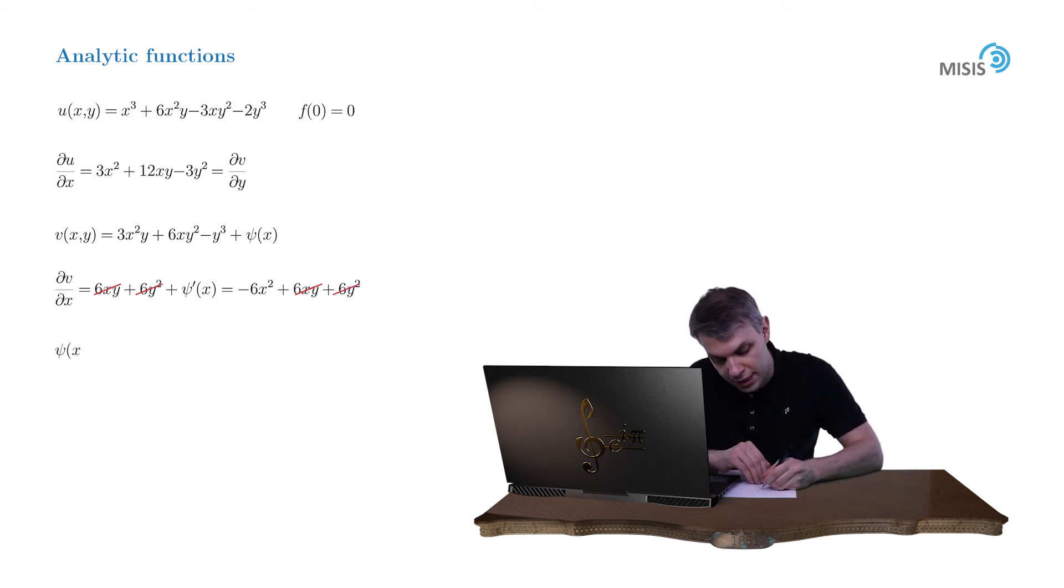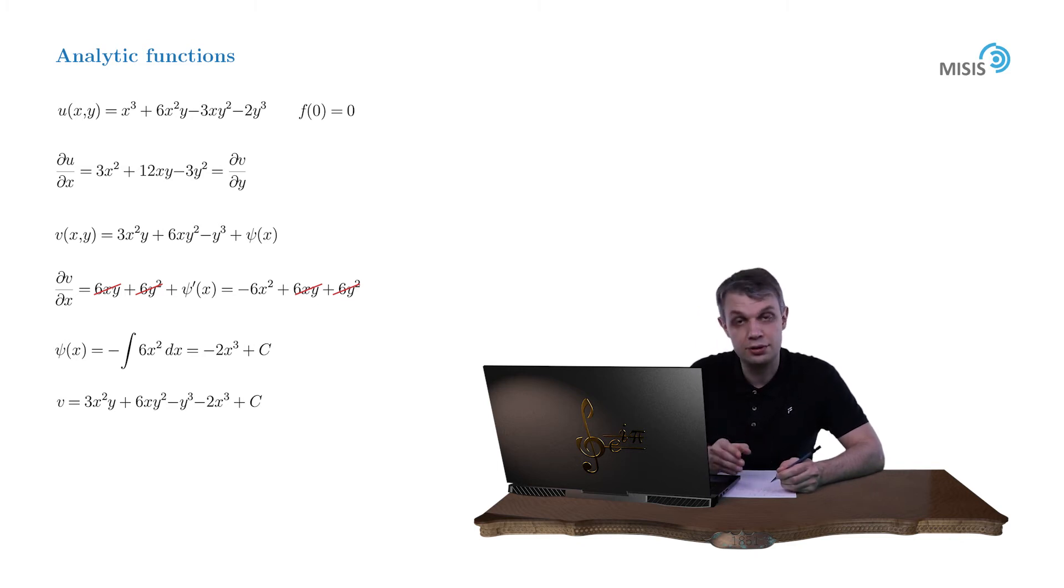And now we integrate it with respect to x. This way psi of x is equal to minus 2x cubed plus some constant. And we see that we just restored the imaginary part of our function up to some additive constant. v is equal to 3x squared y plus 6xy squared minus y cubed minus 2x cubed plus some constant. And this constant is equal to zero due to our initial condition. f of 0 should be equal to zero.